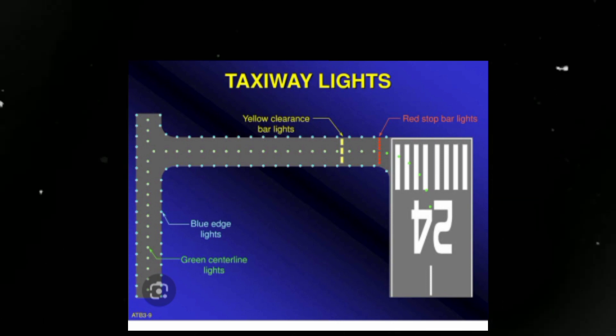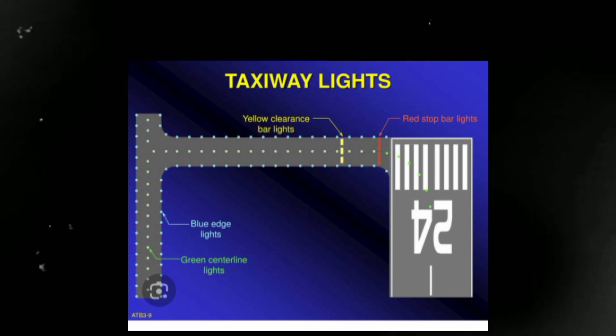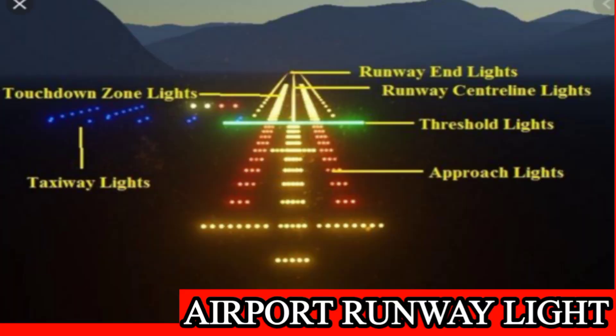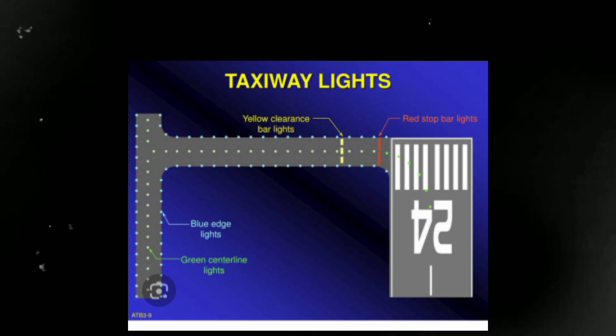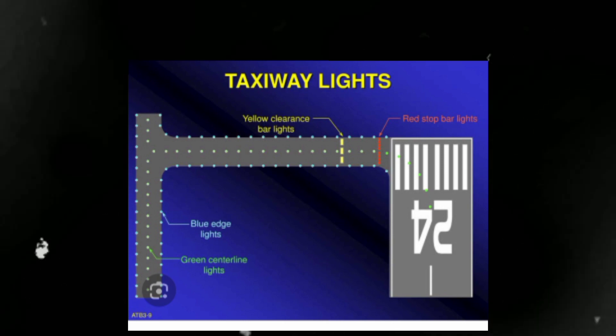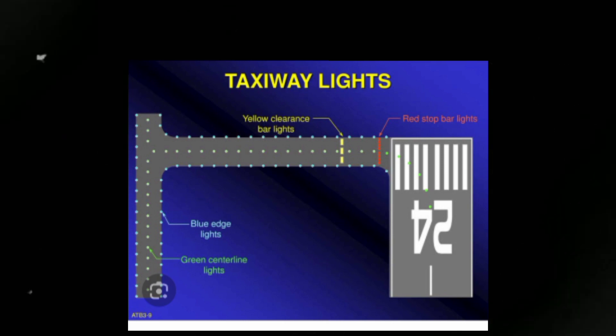Taxiway edge recognition: the lights also help define taxiway edges, making it easier for pilots to see the boundaries and avoid accidentally drifting off course. Runway intrusion prevention: runway intrusion occurs when an aircraft, vehicle, or person inadvertently enters an active runway without authorization. Taxiway lights, along with other signage and markings, are part of the airport's overall strategy to prevent such incidents.